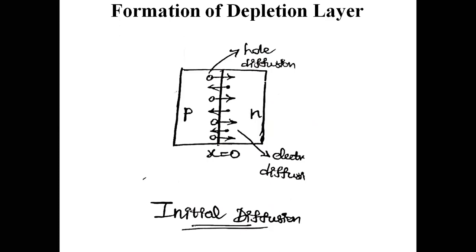The next concept is formation of the depletion layer. The electrons and holes present in p-type and n-type material will diffuse: holes will diffuse to the n side and electrons on the n side will diffuse to the p side. Diffusion of holes and electrons takes place from x equal to zero. Due to this diffusion some depletion layer is going to be formed and some depletion layer is going to be created due to diffusion of charge carriers — electrons and holes.